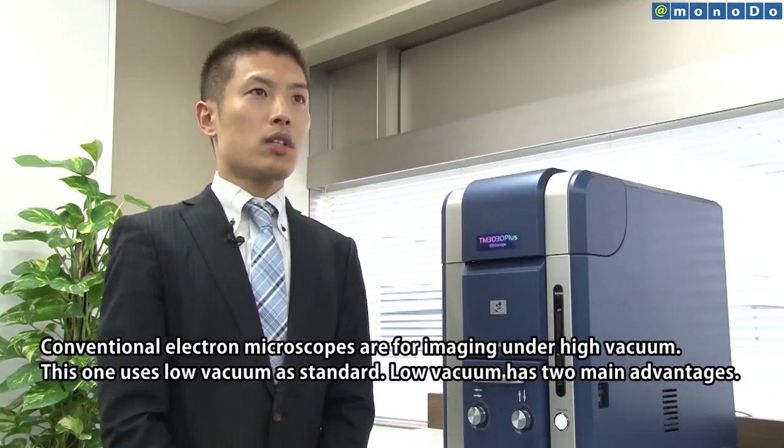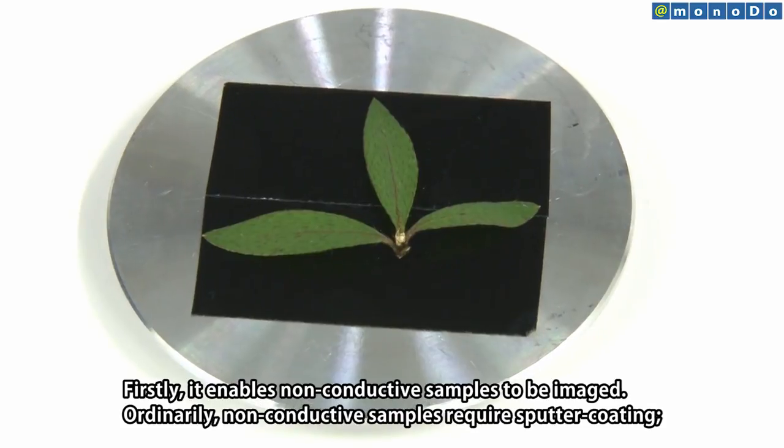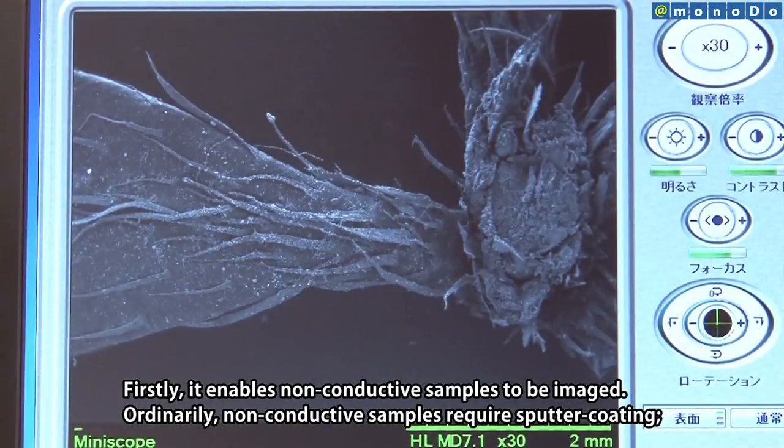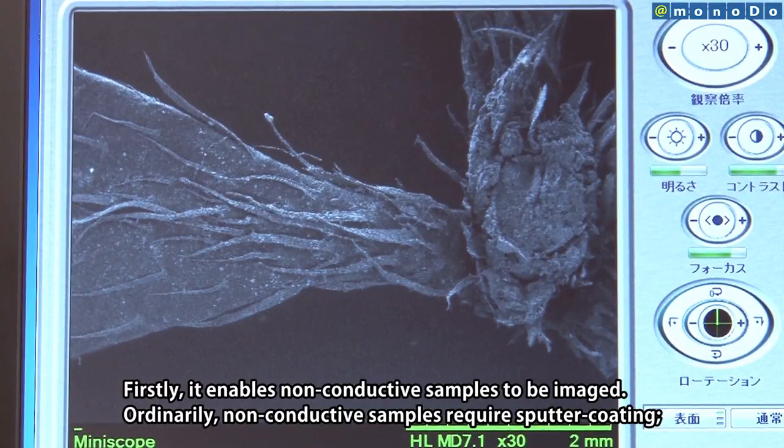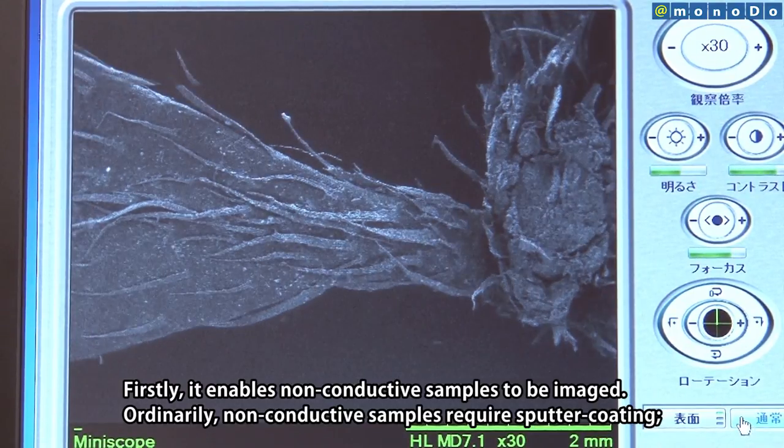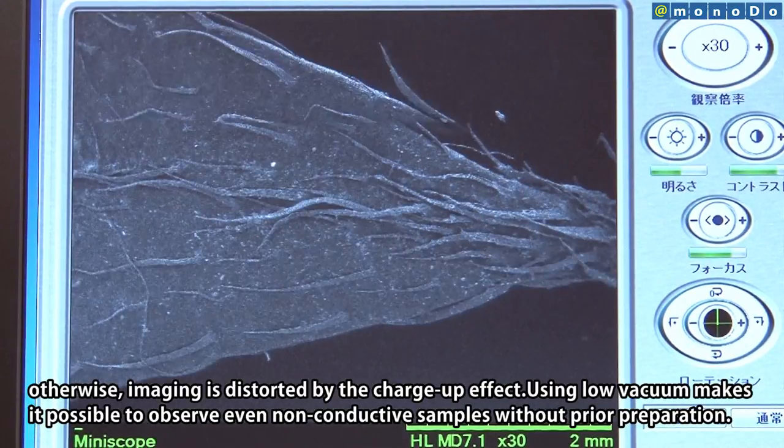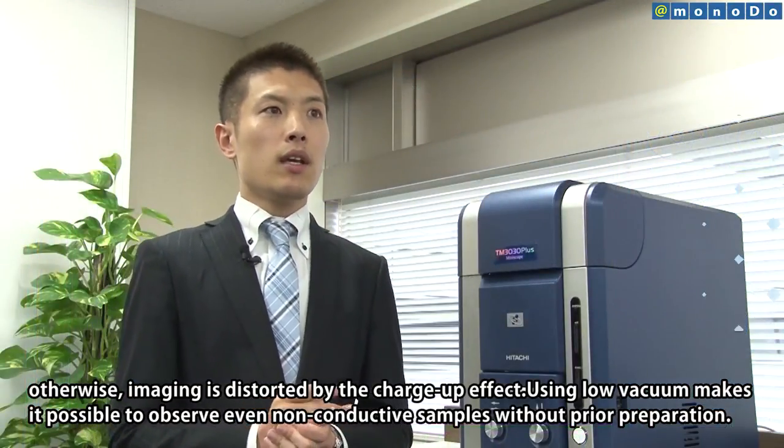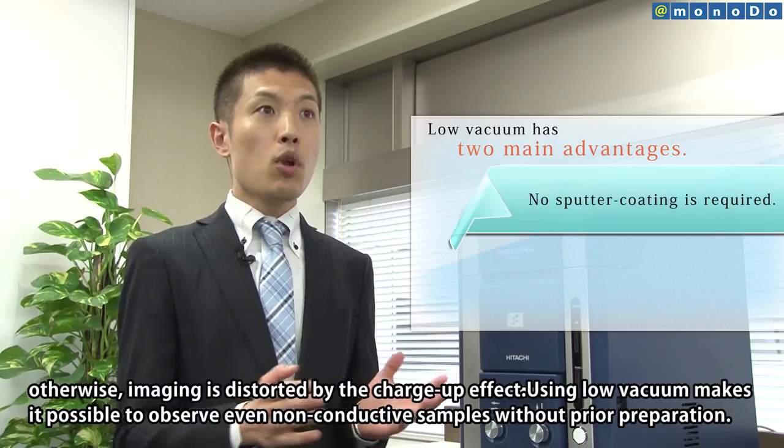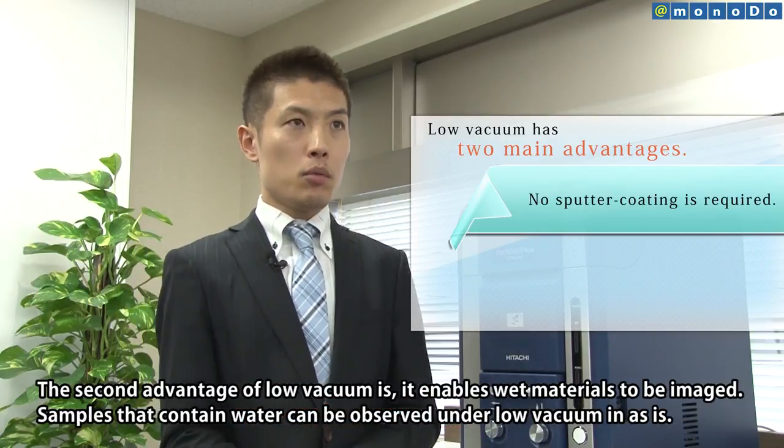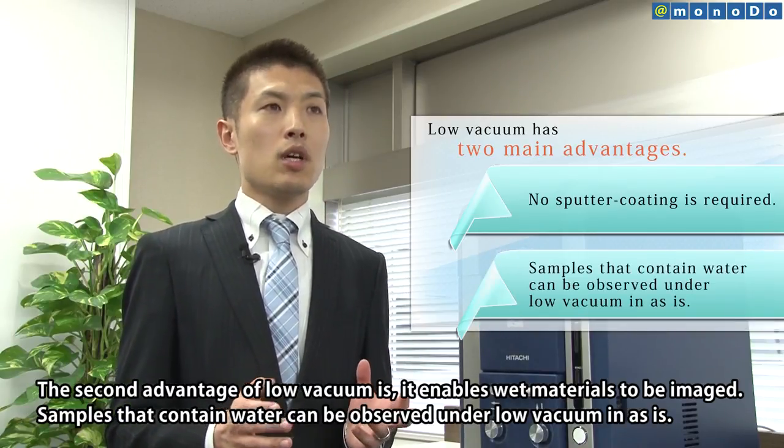The low vacuum mode offers two major benefits. First, for non-conductive insulating samples, conventional methods required sputter coating to prevent charging artifacts. With low vacuum mode, insulating samples can be observed directly without coating. Second, wet samples containing water can also be observed directly in low vacuum mode.